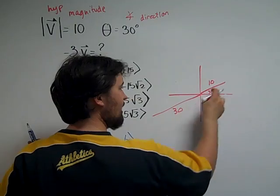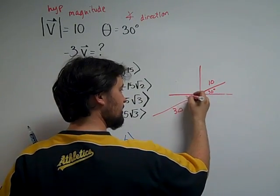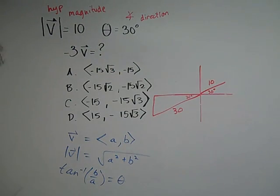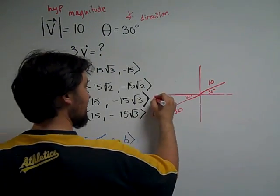And negative 3V is going to be in the exact opposite direction, 3 times as large. So the magnitude of this is going to be 30. And if that's 30, this is also 30 degrees. And what we have for finishing this up is a little 30-60-90 triangle to take care of.